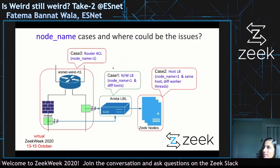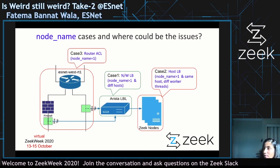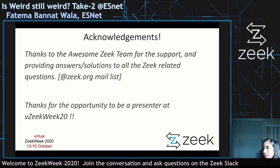This is the diagrammatic view for people who prefer diagrams over text — the same three cases I discussed. The middle case is the Arista one we solved, where the cause was Arista and we were getting more than one node_name value with different hosts like bro-west3 and bro-west2. Case two is when node_name has more than one value but the same hostname — the worker thread is different, meaning traffic is splitting on the host workers. Case three is the router ACL case where you see just one side of the connection on a single node_name value. That was it — thank you everyone for attending, and thanks to the Zeek team for the opportunity to present.